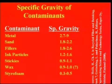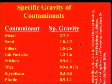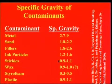Here is an example of specific gravity of some of the contaminants we encounter in paper recycling. Metal is upwards of 2. Sand is between 1.8 and 2.2. Filler stickies can be anywhere from 0.9 to 1.1. Wax, styrofoam, and plastic are between 0.9 and 1.1.